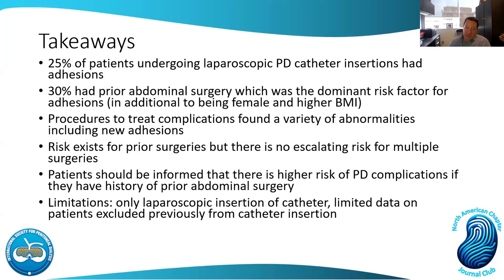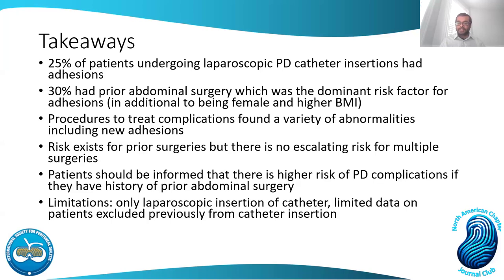They are looking at registry 2.0 right now — no registry data is being entered because they finished their sample size, but they are interested in doing another grant where they can say here's what we learned, here are the remaining questions, and we can do a better job next time. They would also want a very detailed accounting of surgical history. There are also places — Fresenius units — that don't flush at all, while other places do weekly flushes. It would be interesting to see if there's any data on whether outcomes differ.